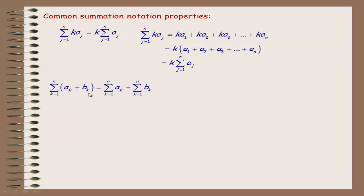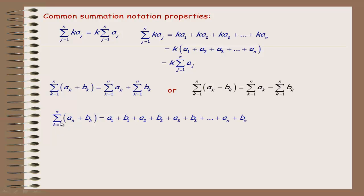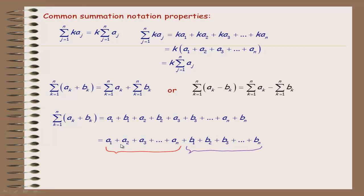If you have a summation of an expression with two or more parts, you can break it down into the summation of each individual part. For subtraction it's the same idea: the summation of (a_k + b_k) equals the summation of a_k plus the summation of b_k. Writing out the series and regrouping all a's first and then all b's demonstrates that one summation can be split into two individual summations.